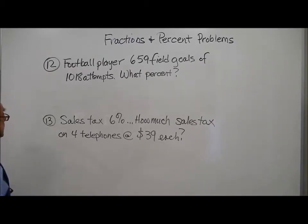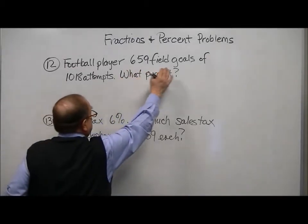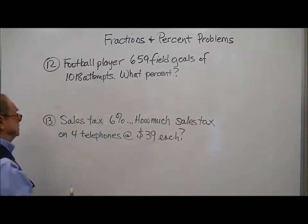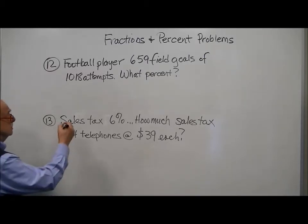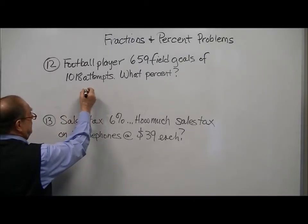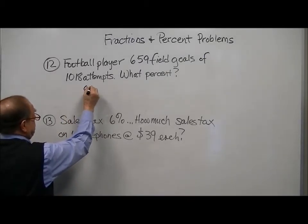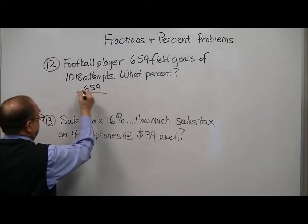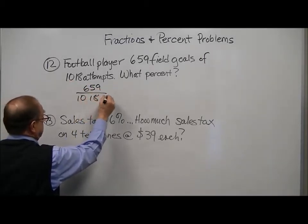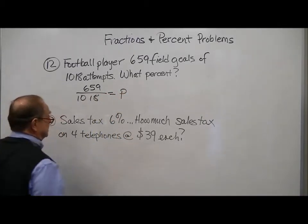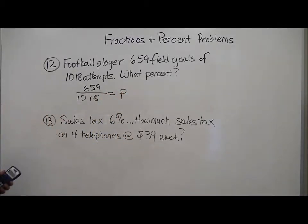Okay, on this one we're talking about a football player who makes this many field goals out of this many attempts. What is his percent of success in kicking? Well, it's basically a ratio of 659 divided by 1018. This will give you the percent.